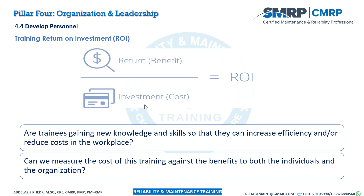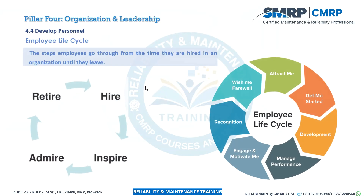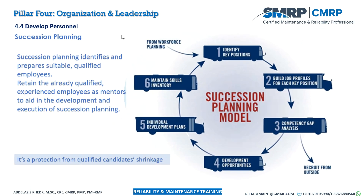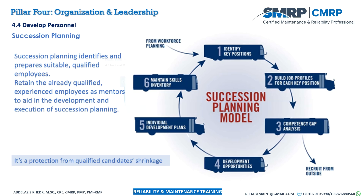We should measure the return on investment for our training plans. Another useful tool is the Employee Life Cycle — we hire employees, inspire them, admire them until they retire. Succession planning is also critical: having second and third staff ready to cover any absence of first-line staff or top management, ensuring the organization is not affected and that people are retained by being inspired and empowered for better roles.